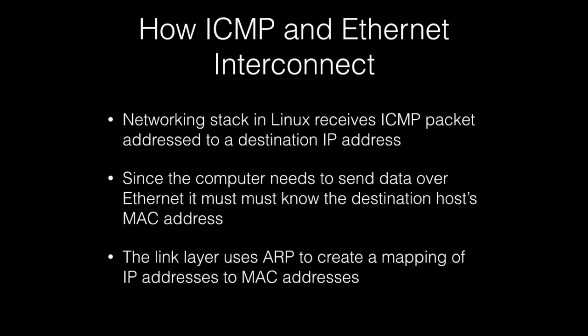The networking stack in Linux is going to receive the ICMP packet from the ping application, and it is going to be addressed to a destination IP address, that of the host that we are trying to find. But the computer is also going to have to send data over Ethernet, and Ethernet is all based on the destination host's MAC address. Because of this, the link layer is now going to have to use ARP, which stands for the Address Resolution Protocol, to create a mapping between the IP address and the MAC address, so that when it receives a packet from ping via ICMP, it now knows how to encapsulate it in an Ethernet packet.